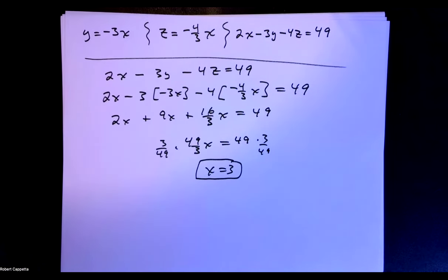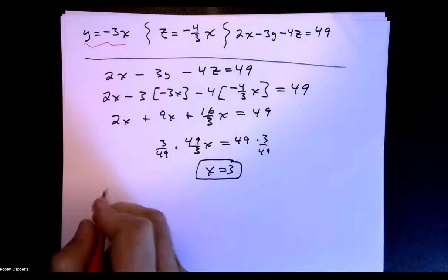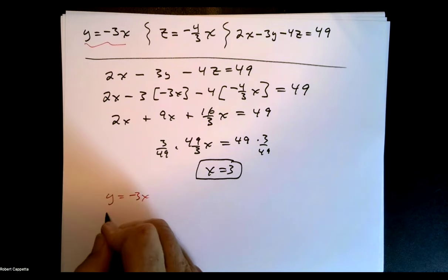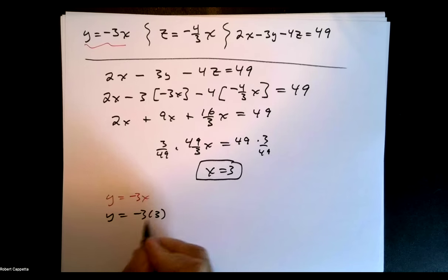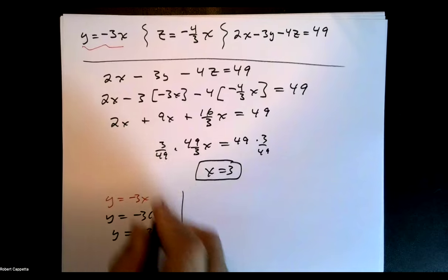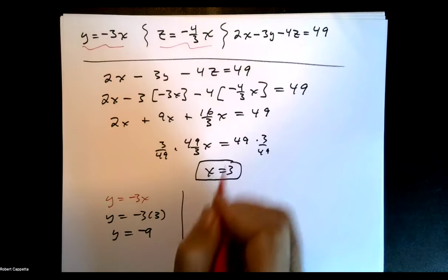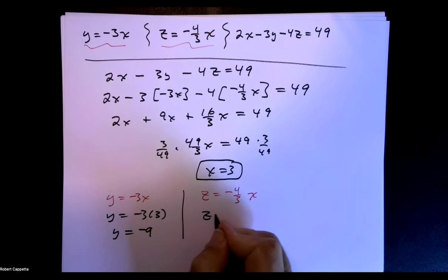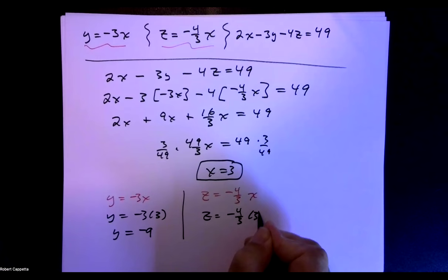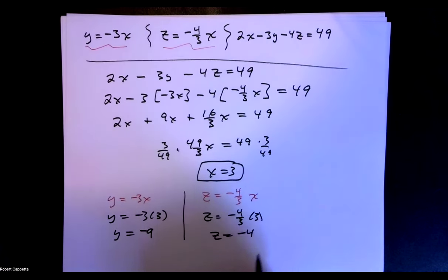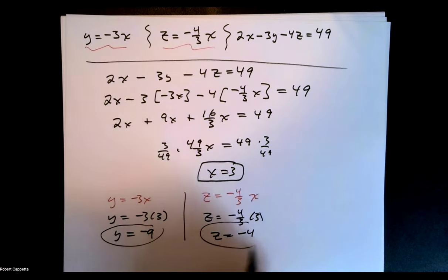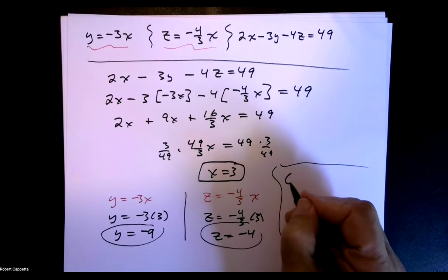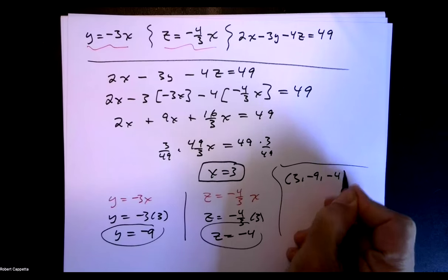With x equals 3, we find y equals negative 3 times 3, so y equals negative 9. And z equals negative 4 thirds times 3, so z equals negative 4. There is our optimal point of tangency: the point on the plane that is also on the ellipsoid is (3, negative 9, negative 4).